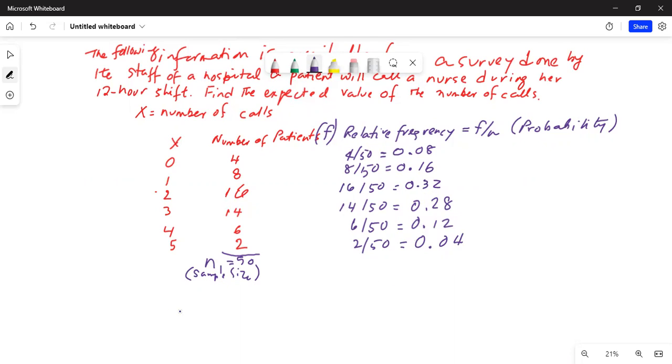Now we have been asked to find the expected value of the number of calls. Expected value is written as E(x), which is also equal to the mean, equal to sum of x times P(x) or probability. So basically you multiply each x with the corresponding probability and add them up.